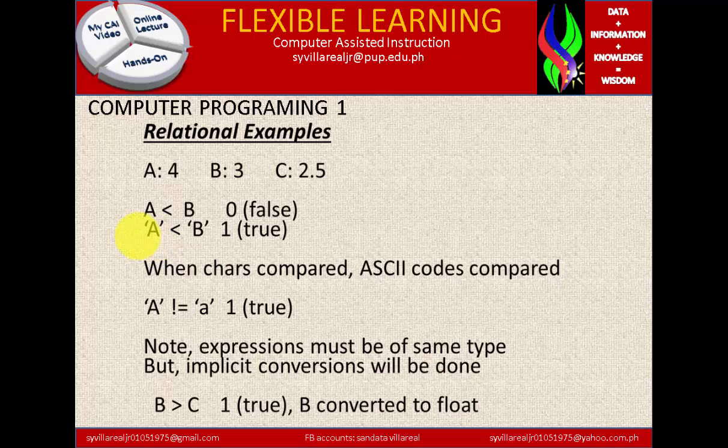But if you're going to change that into, for example, 'ab' or 'ac' is less than 'b', that is considered to be false. Because 'ab' is greater than 'b'.